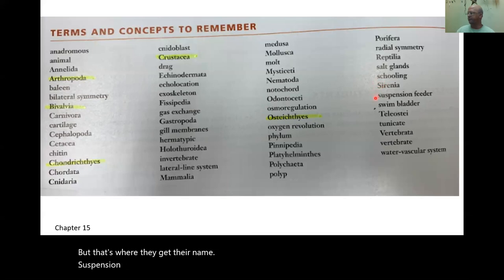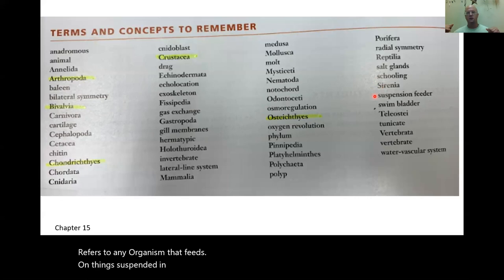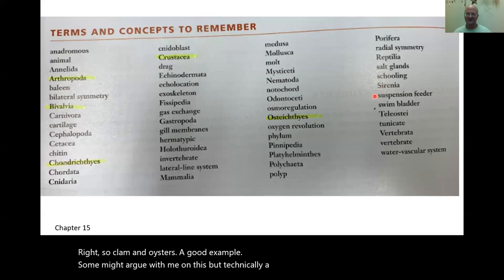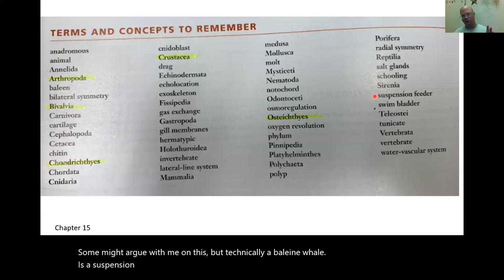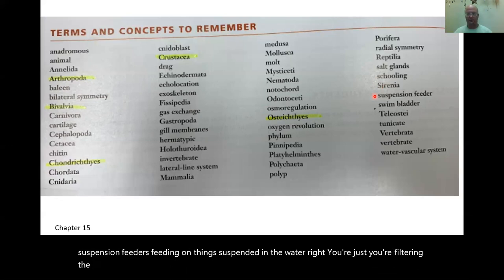Suspension feeder refers to any organism that feeds on things suspended in the water. A clam or oyster is a good example. Technically, a baleen whale may also be a suspension feeder or filter feeder — there's some gray area. Essentially you're filtering the water and eating the stuff in there.